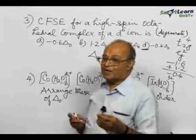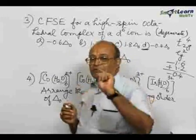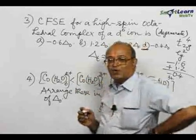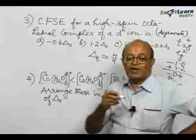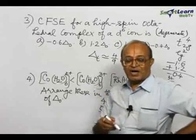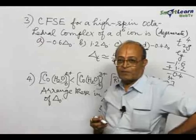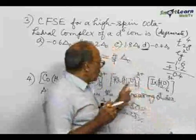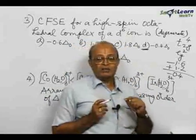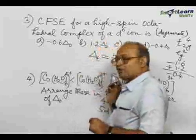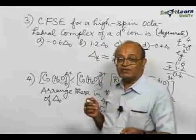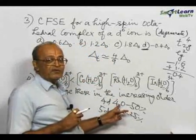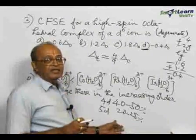As the number of charges increases, so does delta O. So [Co(H₂O)₆]²⁺ will have a lower value of delta O because less charge means less delta O. Now compare the remaining three: Cobalt — 3D element; Rhodium — 4D; Iridium — 5D. From 3D to 4D there is an increase in delta O, and similarly from 4D to 5D there is again an increase in delta O.